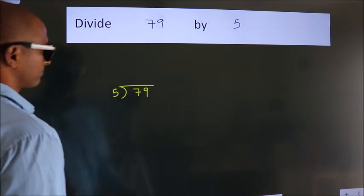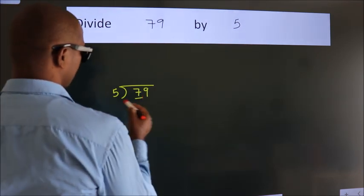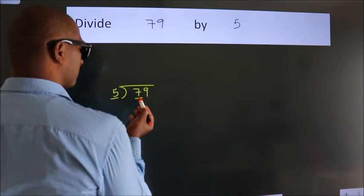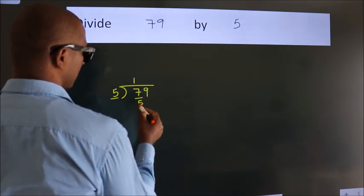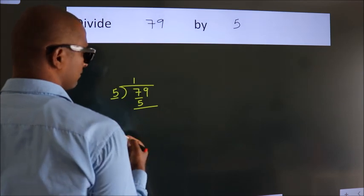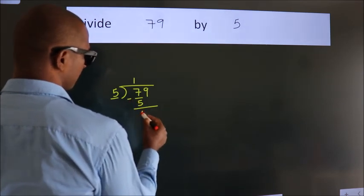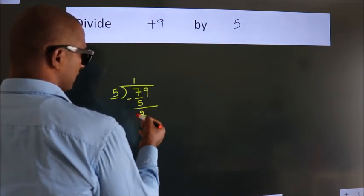Next, here we have 7, here 5. A number close to 7 in the 5 table is 5 once 5. Now, we should subtract. We get 2.